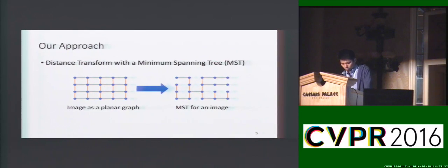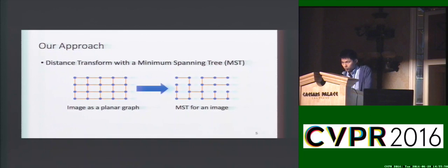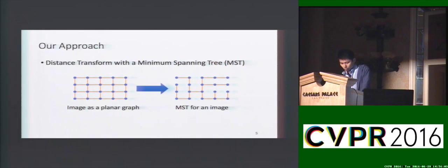We tackle this problem in a different manner. We don't compute distance transforms on image grids or superpixel graphs. Instead, we take the image as a planar graph and grow a minimum spanning tree on the image, and we compute the distance transform on the tree. The motivation is that since the minimum spanning tree spans the region through a set of edges of minimal cost, the distance defined on the tree reveals the object geometry information in the scene. Furthermore, the predefined tree paths largely reduce the search space for our distance transform task.